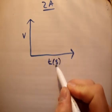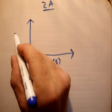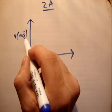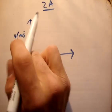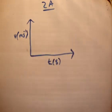Time is measured in seconds and velocity or speed is measured in meters per second, like this, meters per second.